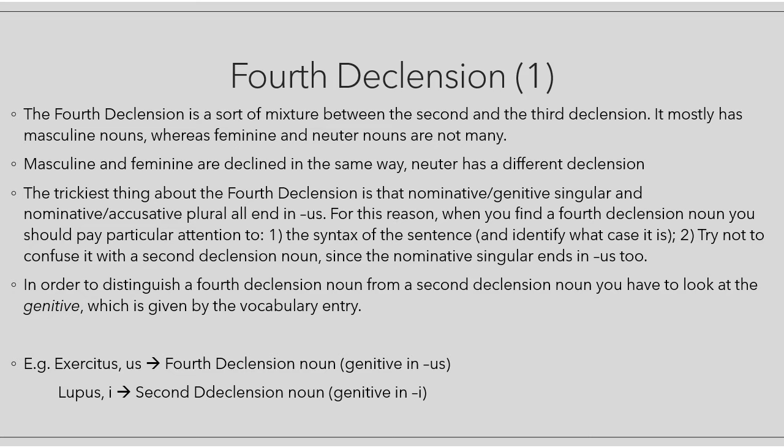For this reason, when you find a fourth declension noun, you should pay particular attention to the syntax of the sentence, so you have to be able to recognize the grammatical function of that noun. Looking at adjectives that agree with the fourth declension noun can help you identify the case. You also have to try not to confuse a fourth declension noun with a second declension noun, because the fourth declension noun has many forms ending in 'us', but 'us' is also the ending for the nominative singular of the second declension.